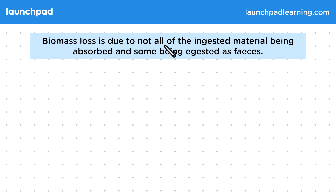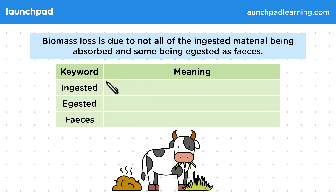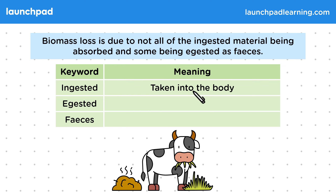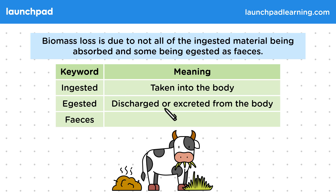Biomass loss is due to not all of the ingested material being absorbed, and some being egested as faeces. Ingested means taken into the body. Egested means discharged or excreted from the body. And faeces mean poo.